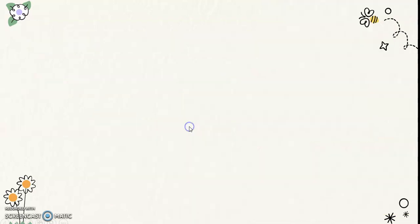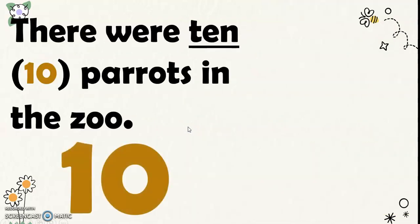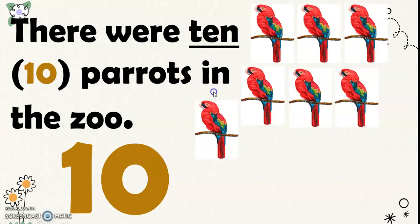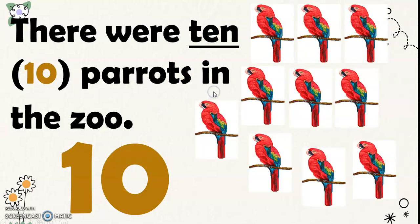And of course, there were 10 parrots in the zoo. This is the number word for 10 and the number symbol for 10. So there were 10 parrots in the zoo.